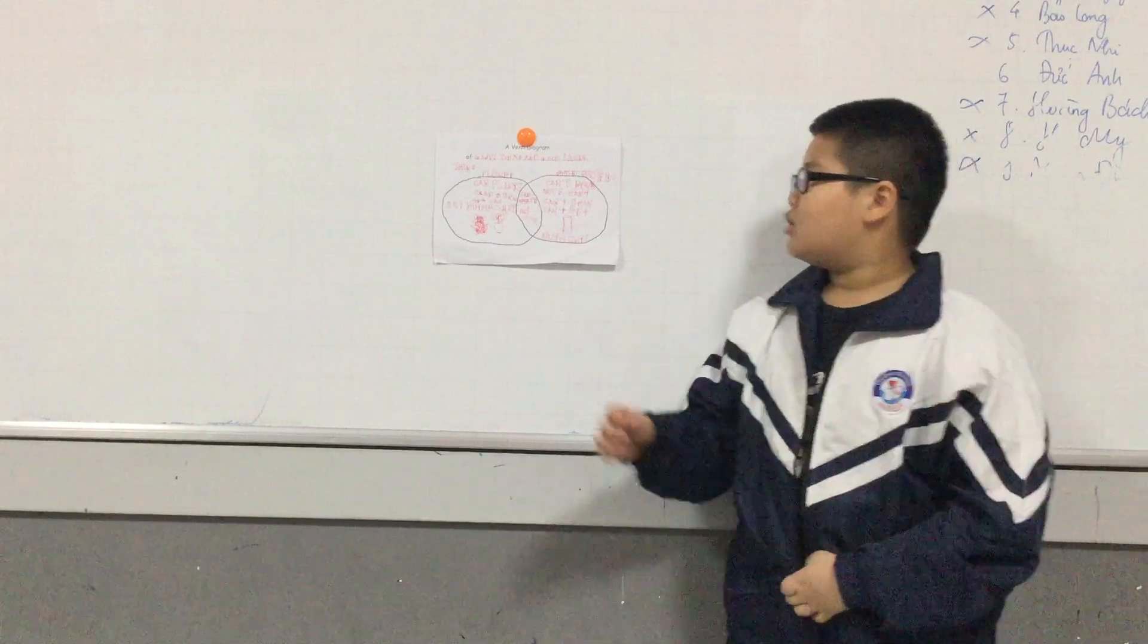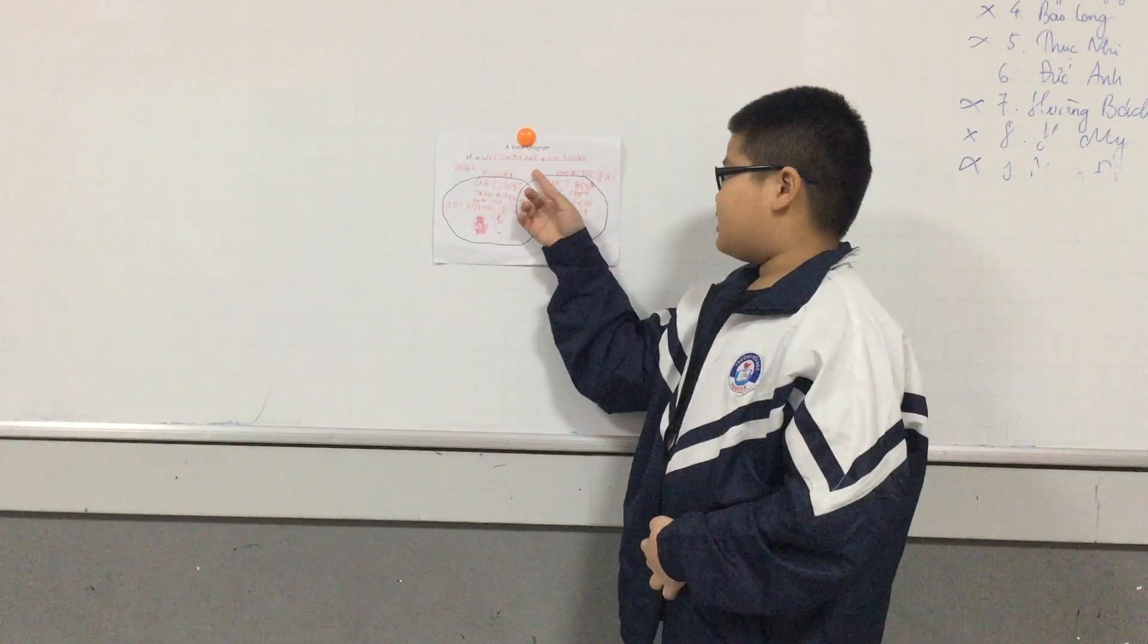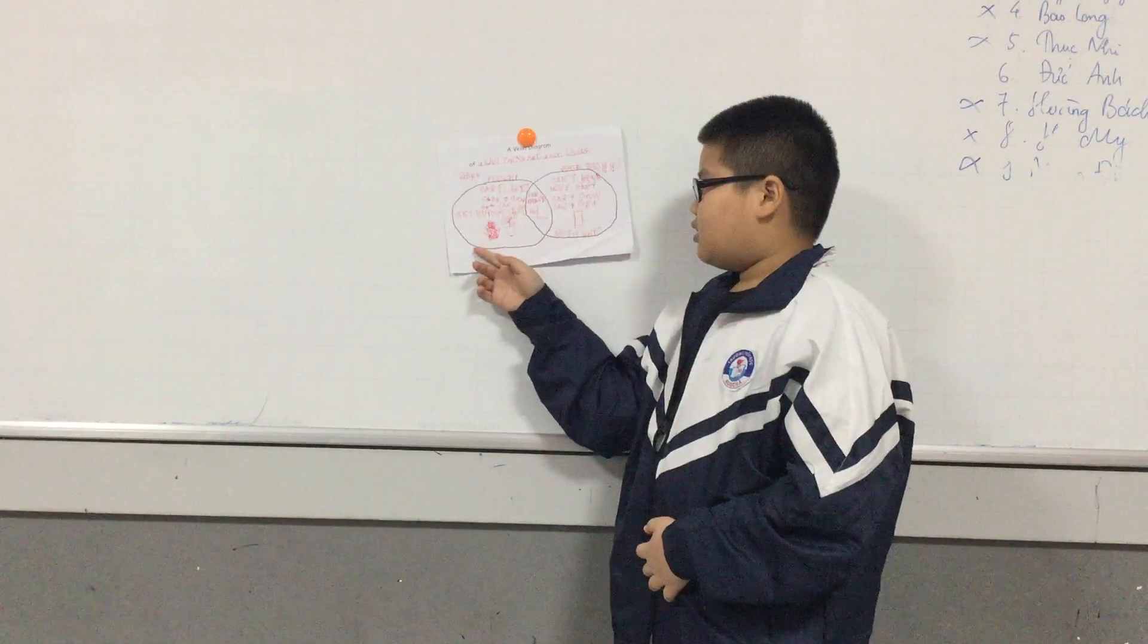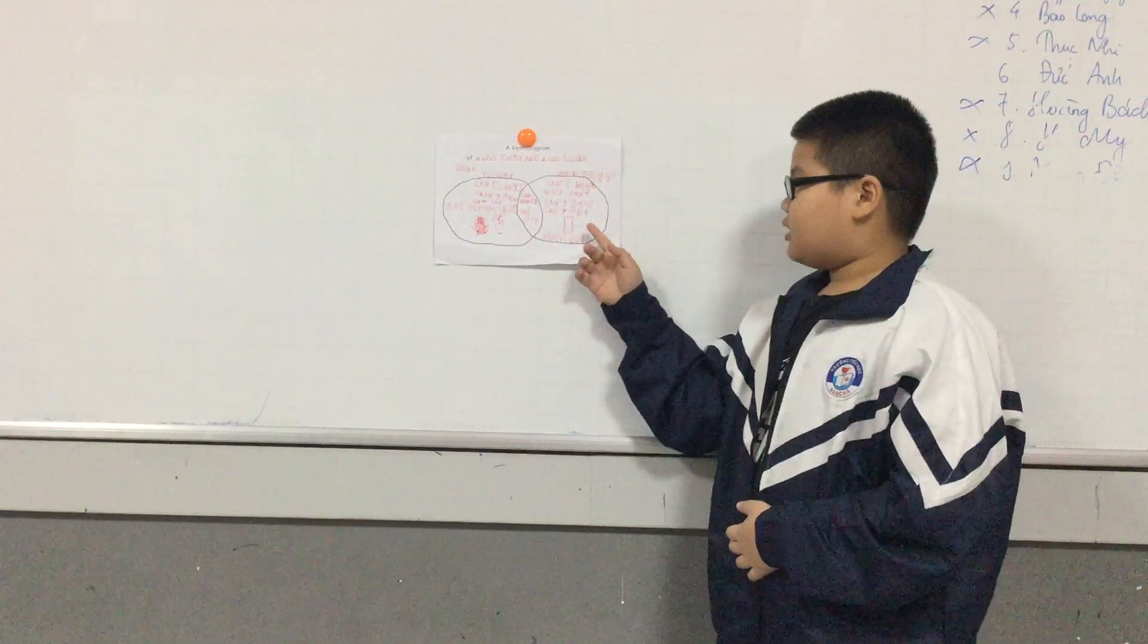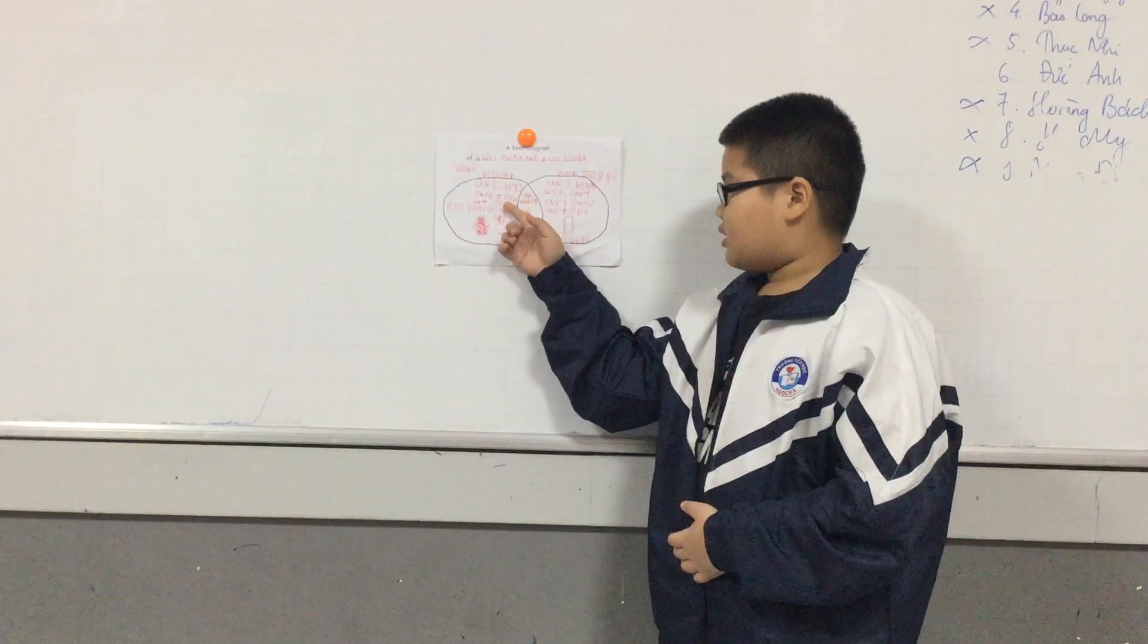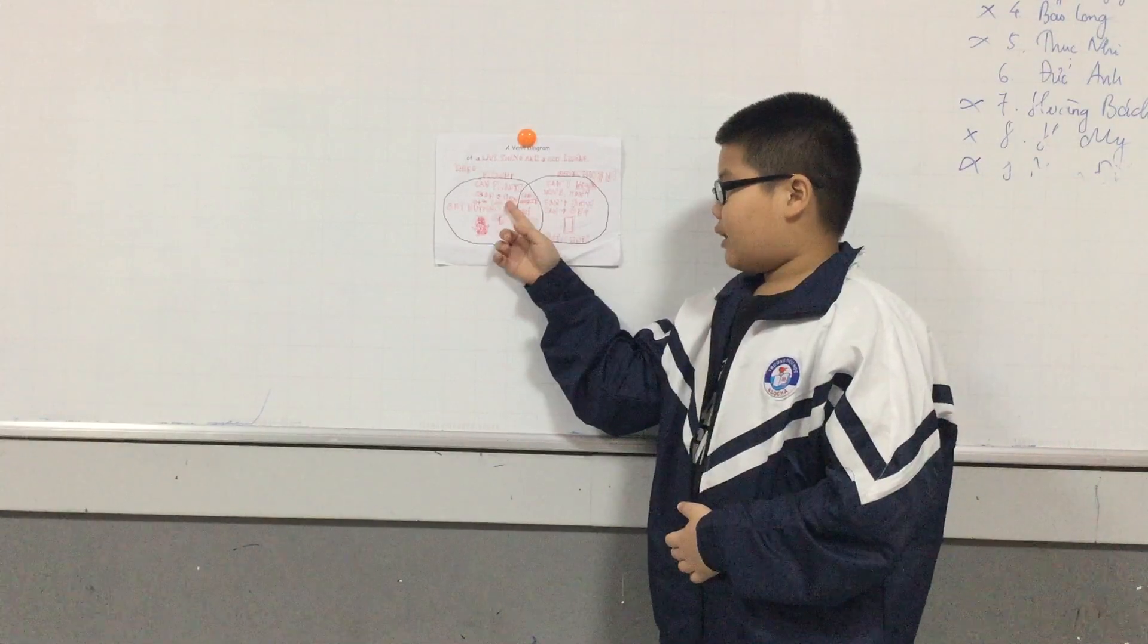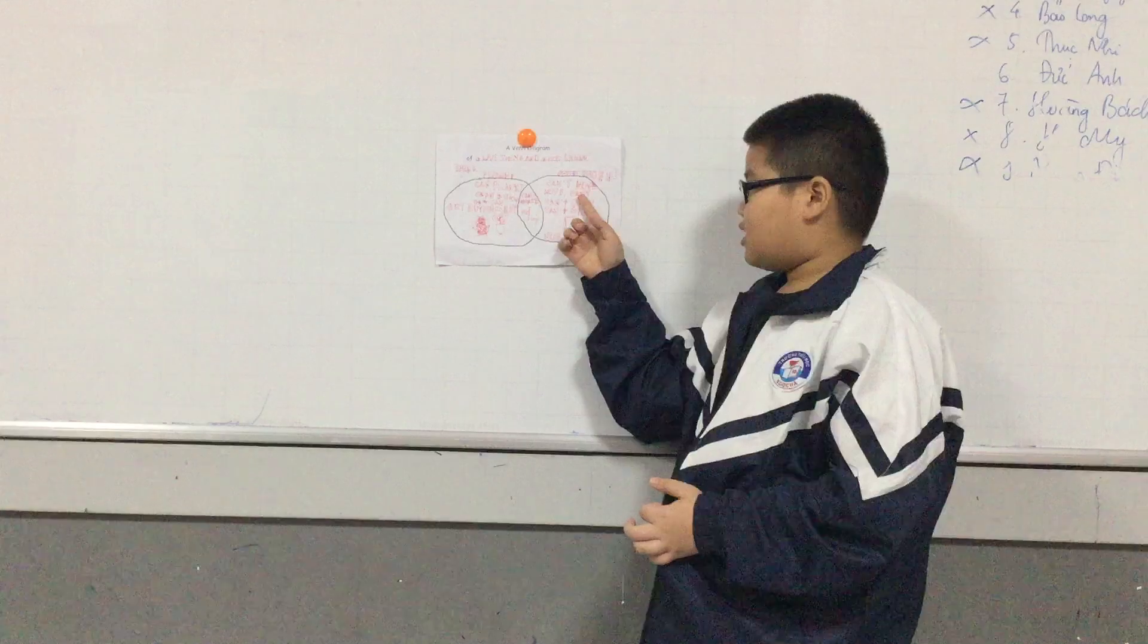Today I tell you about the difference between a flower and a bone. A flower can plant, can grow, can get nutrition, and a bone can't move, can't grow, and can't get nutrition.